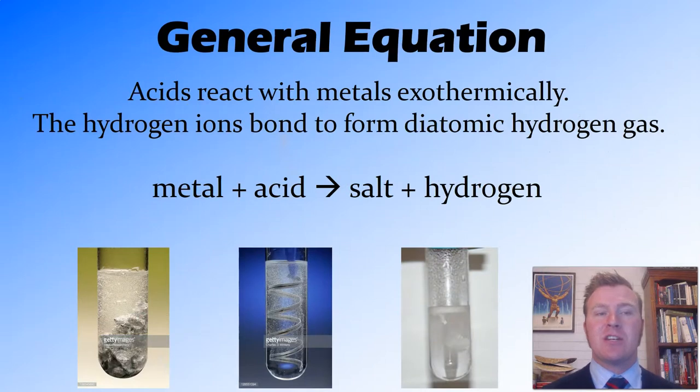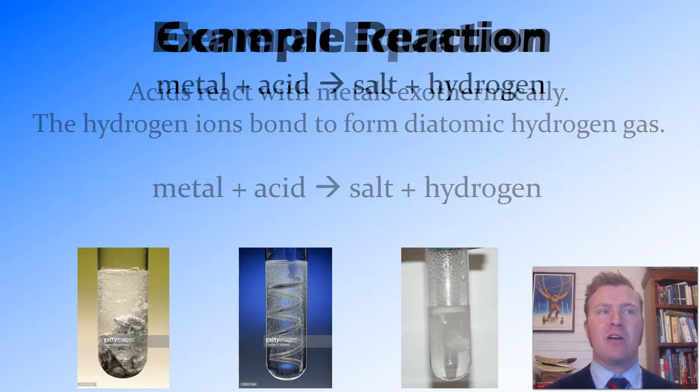So this reaction is an exothermic reaction. This means that heat is given off as this reaction occurs. What happens in the reaction is the hydrogen ions from the acid bond with each other to form a hydrogen diatomic, so two atoms of hydrogen gas, H2. And the anion that's left over binds with the metal to form a salt or an ionic compound.